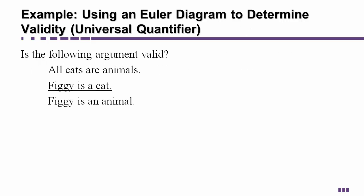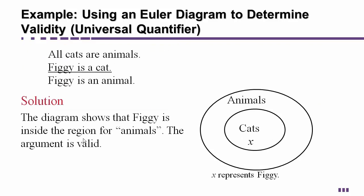Let's look at an example. Is the following argument valid? All cats are animals and Figgy is a cat. Those two things are the premises and under the line is your conclusion. Therefore Figgy is an animal and then all is that universal qualifier. We can determine if that is true by drawing a picture.